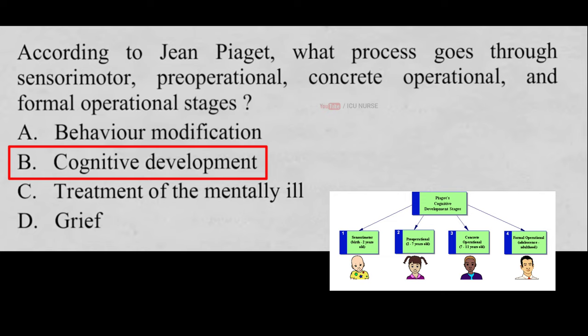Piaget divided children's cognitive development into four stages. Each stage represents a new way of thinking and understanding the world, and is correlated with an age period of childhood but only approximately. Piaget's four stages include: sensorimotor intelligence, preoperational thinking, concrete operational thinking, and formal operational thinking.